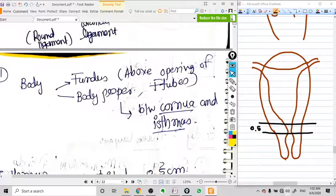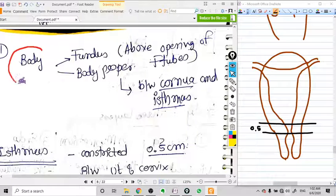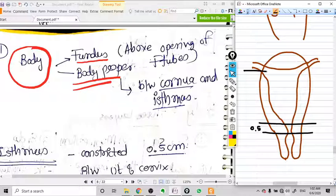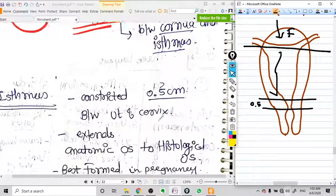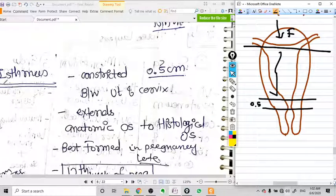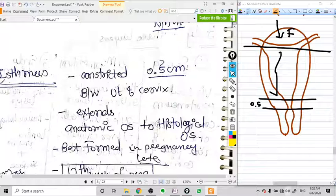If we see the body of the uterus, it is divided into fundus and body proper. The fundus part is above the level of cornu. This part is called the fundus of the uterus. Below this part we take it as the body.